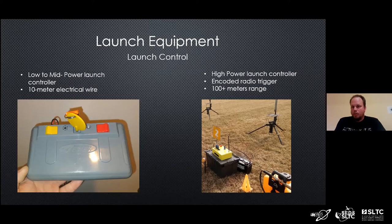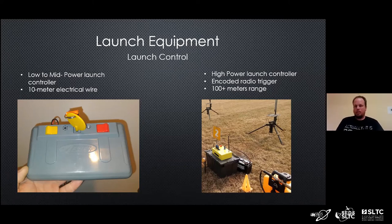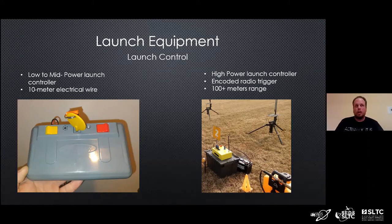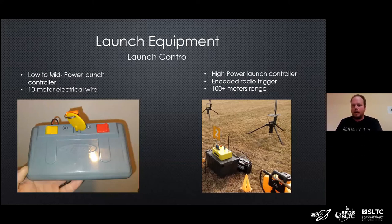For high power clubs, a radio-controlled system sends an encoded radio signal to a receiver at the launch pad, allowing you to fire from 100 meters or more away depending on the size of the rocket. You're generally going to see this at clubs where people can pool their resources — it's pretty expensive. Our club just bought a new system this year; it was on the order of four thousand US dollars. This is the safe way to ignite a high power motor from a distance.